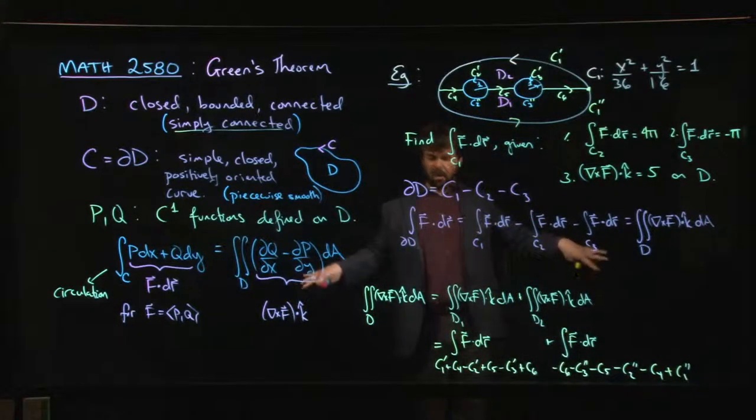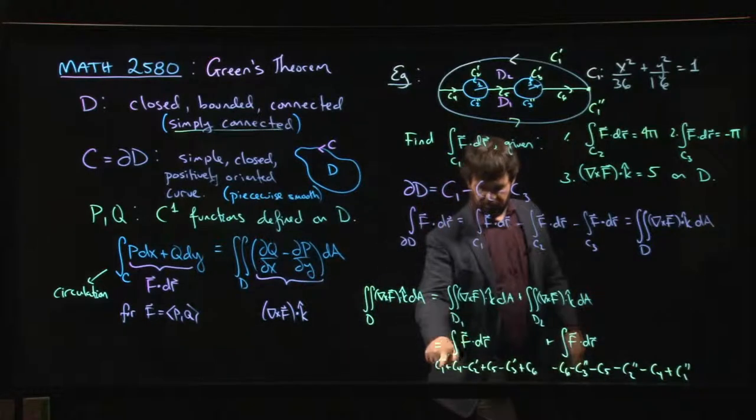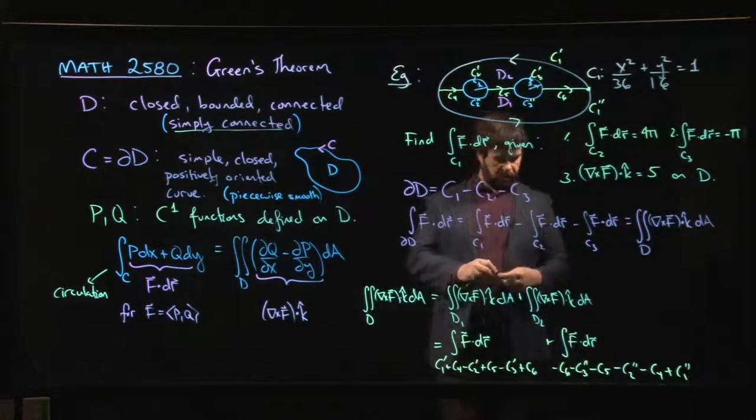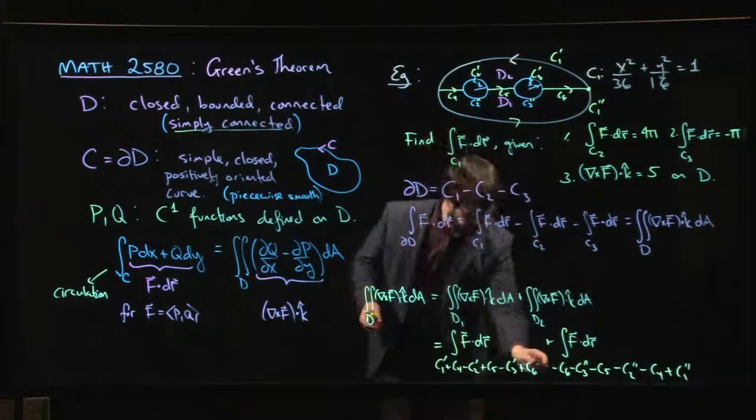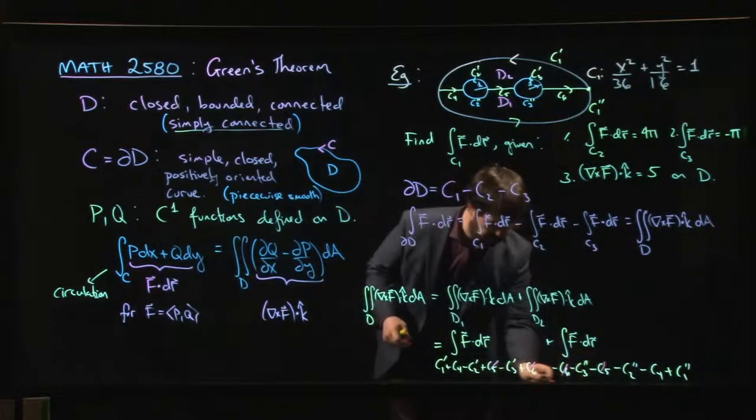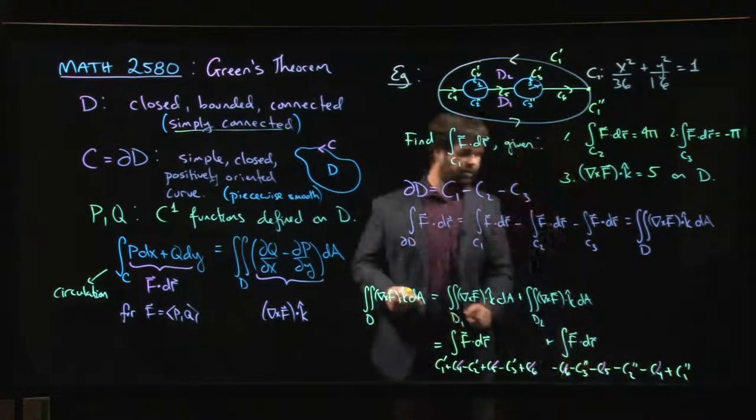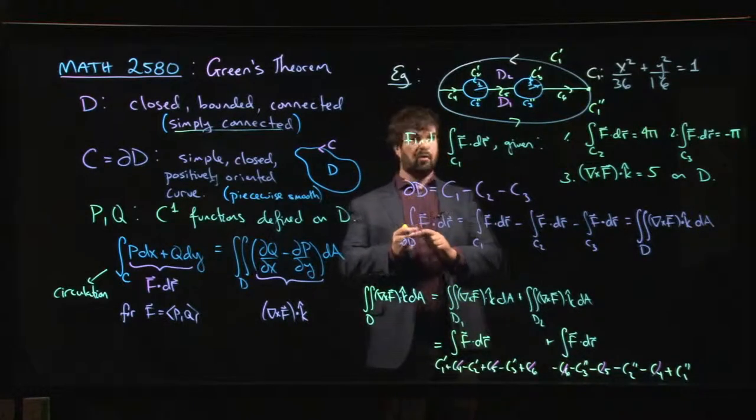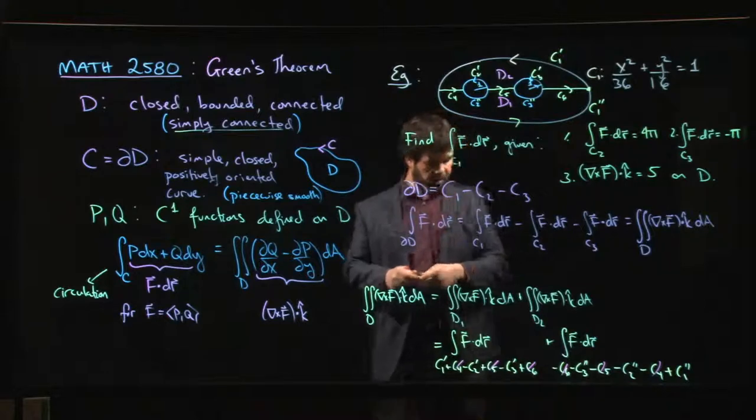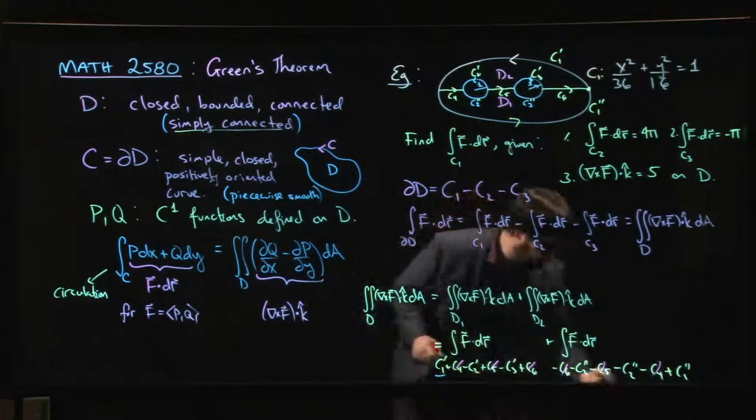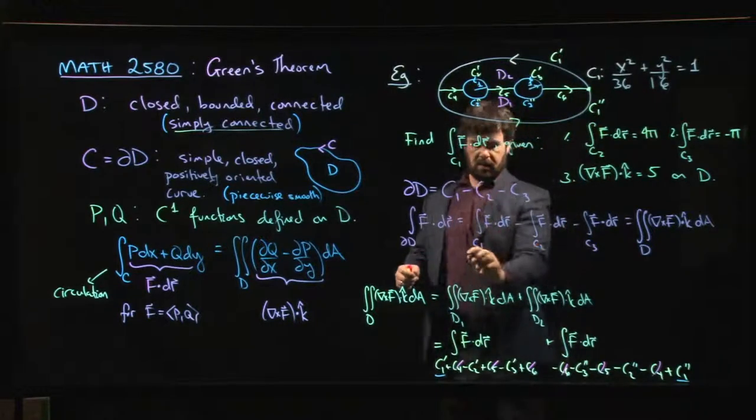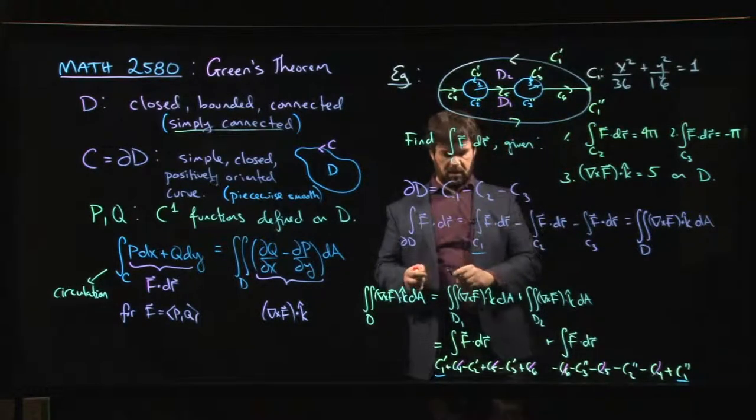And so you'd expand all that out. You'd do the integral along this, plus that, minus that, plus this, minus that, and so on. And you go through and you're like, okay, wait a sec. C6, so those cancel. C5 minus C5, they cancel. C4 minus C4, those cancel. So all the cross cuts, they cancel. And then you'll notice C1 prime plus C1 double prime. When I join those together, that gets me C1.